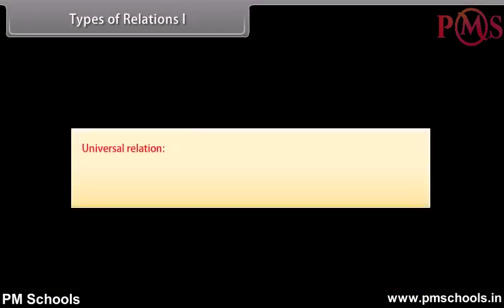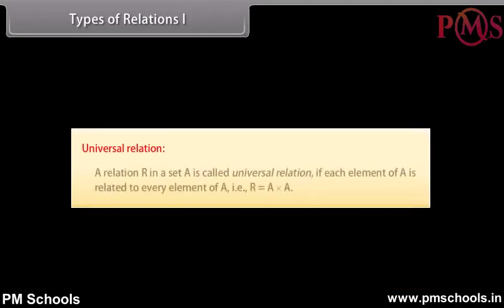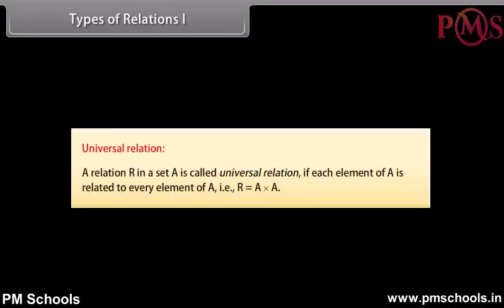Universal relation: A relation R in a set A is called universal relation if each element of A is related to every element of A. That is, R is equal to A cross A.